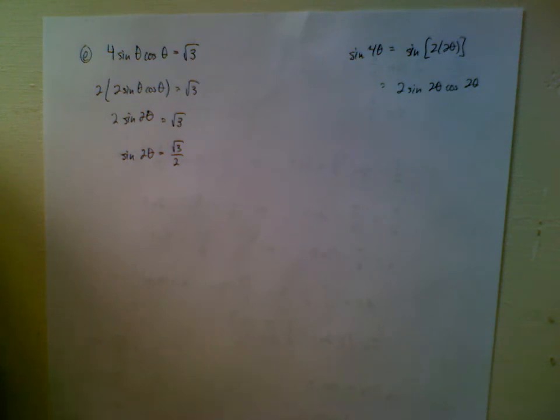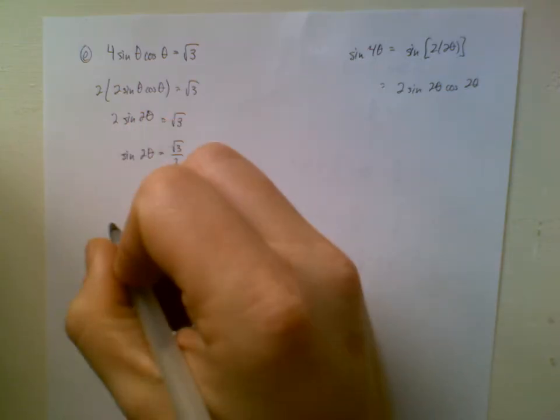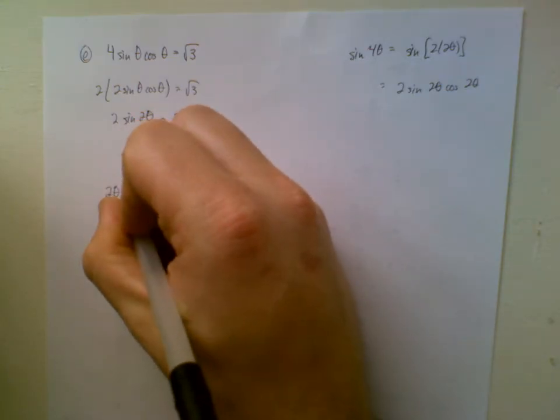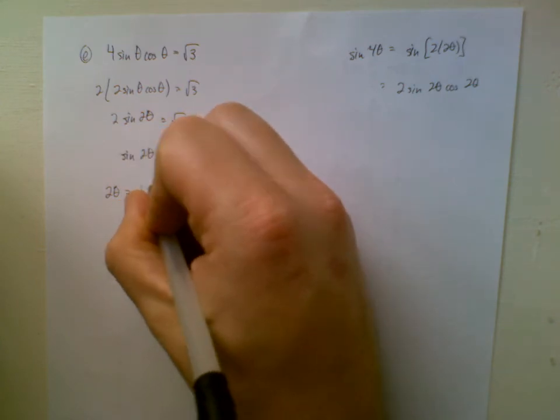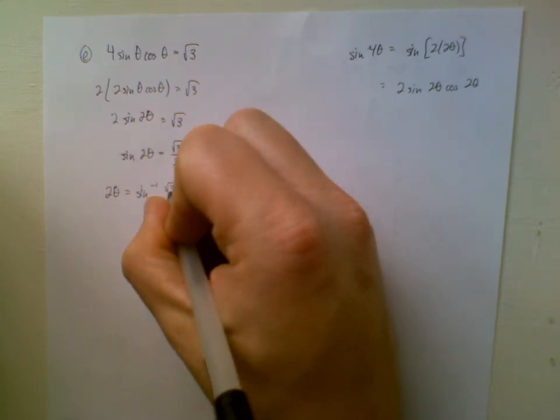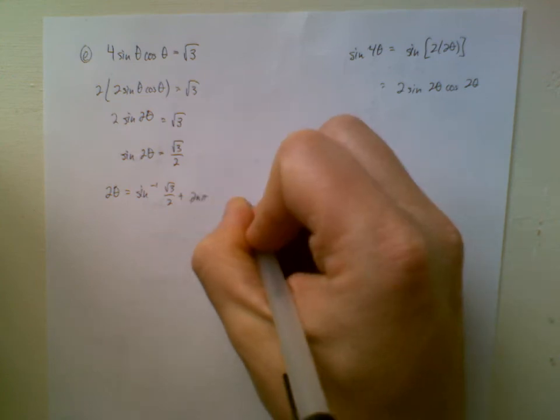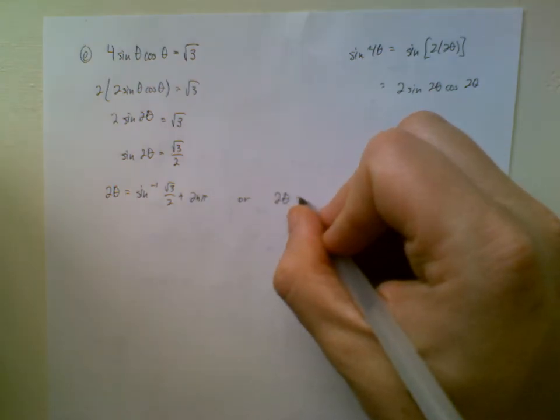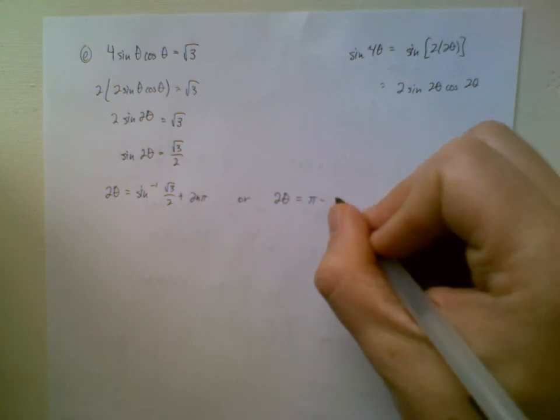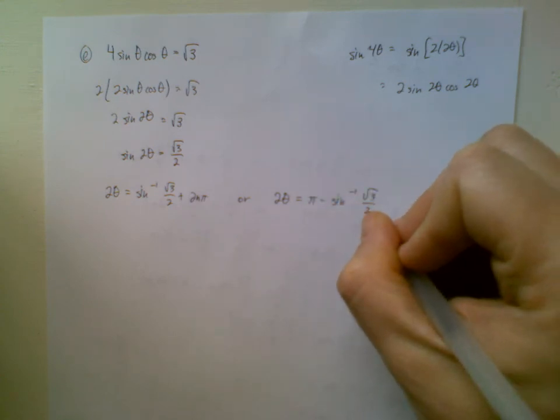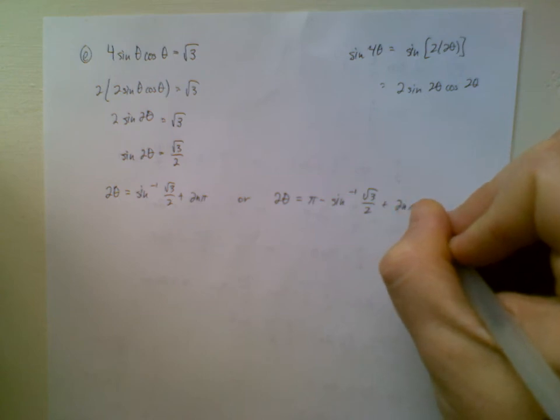And now we're ready to apply our handy-dandy rule, right? We can say, all right, if sine 2 theta is root 3 over 2, then that must mean 2 theta is sine inverse of root 3 over 2 plus 2n pi, or 2 theta is pi minus sine inverse of root 3 over 2 plus 2n pi.